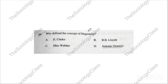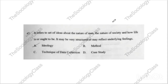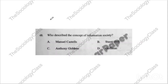Question number forty-six: 'Who gave the concept of hegemony?' This is a repeated question. The correct answer is D — Antonio Gramsci. Question forty-seven: 'It refers to a set of ideas about the nature of man, the nature of society, and how life is or ought to be — it may be very structured or reflect underlying feelings.' The correct answer is A — ideology.